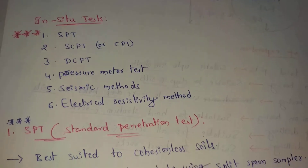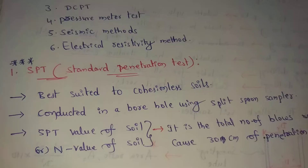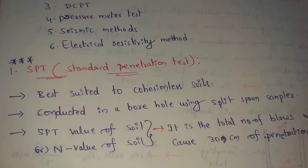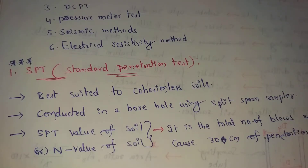The Standard Penetration Test is best suited to cohesionless soils. Cohesionless soils are those where the cohesion value C is equal to zero.